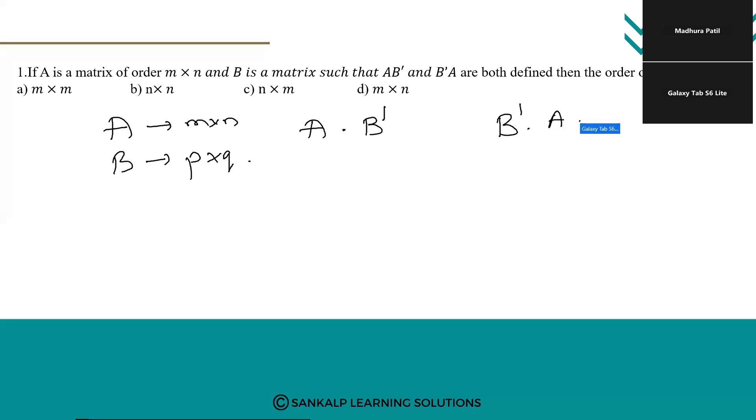Now by the rule of product we know that we can find the product of two matrices only if the number of columns of first matrix is equal to number of rows of second matrix.